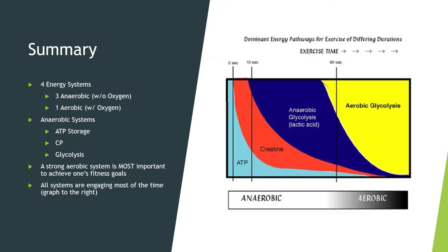In summary for metabolism and energy systems: there are four energy systems — three are anaerobic without oxygen, and one is aerobic with oxygen. The anaerobic systems are ATP storage, creatine phosphate, and glycolysis, each with different maximum time frames and different types of energy produced. A strong aerobic system is most important to achieve fitness goals because it allows you to replenish and push harder with every subsequent set, every subsequent day, every subsequent workout.